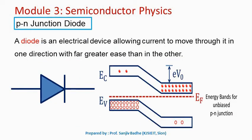A P-N junction diode is obtained by joining a P-type semiconductor with an N-type semiconductor. A diode can be defined as an electrical device allowing current to move through it in one direction with far greater ease than in the other direction — significant current flows in one direction, and only negligible current in the other. In the symbol for a P-N junction diode, the line indicates the N side and is called the cathode, while the triangle indicates the P side and is called the anode.